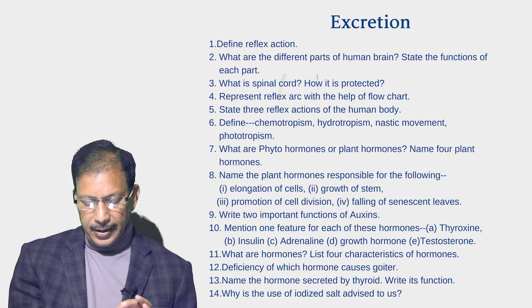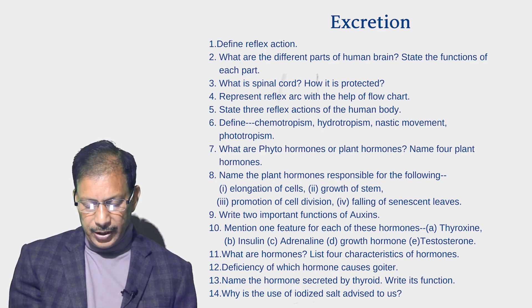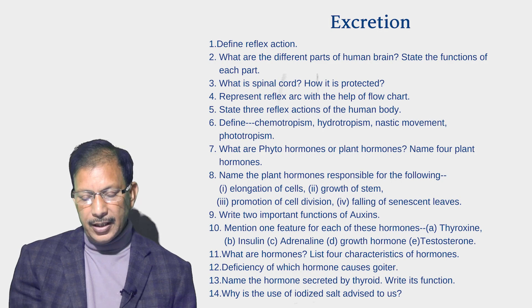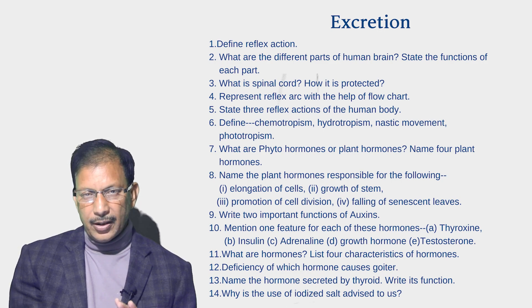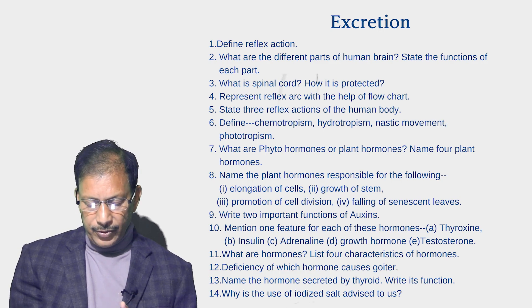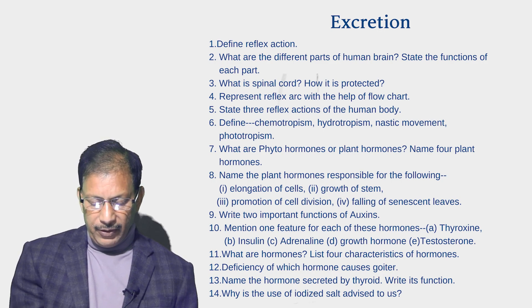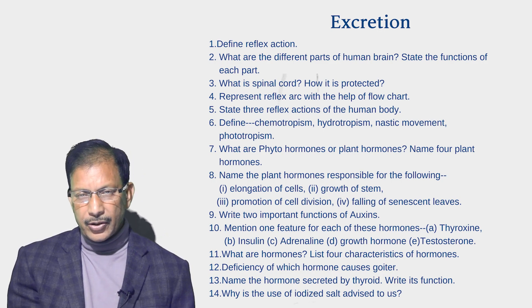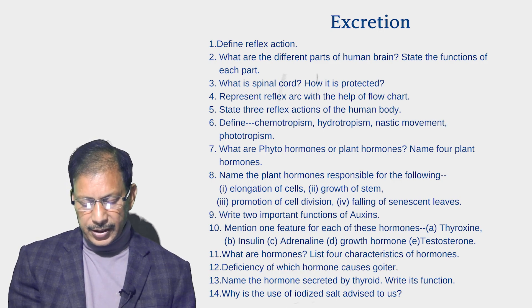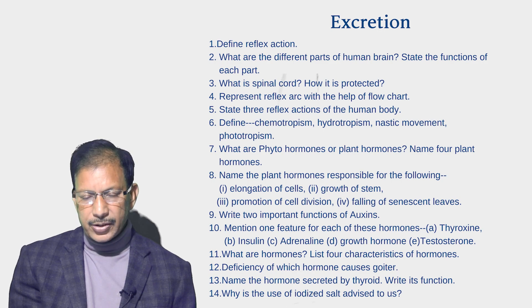Mention one feature for each of the following hormones: (a) thyroxine, (b) insulin, (c) adrenaline, (d) growth hormone, and (e) testosterone. What are hormones? List four characteristics of hormones. Deficiency of which hormone causes goiter? Name the hormone secreted by the thyroid and write its function.